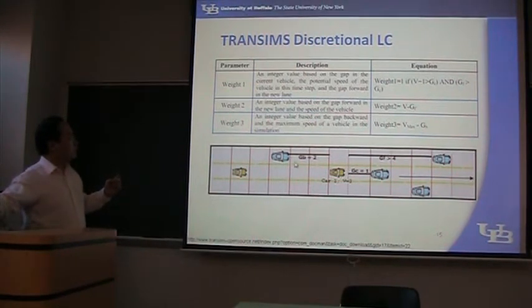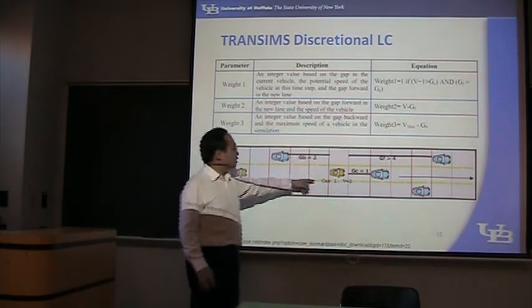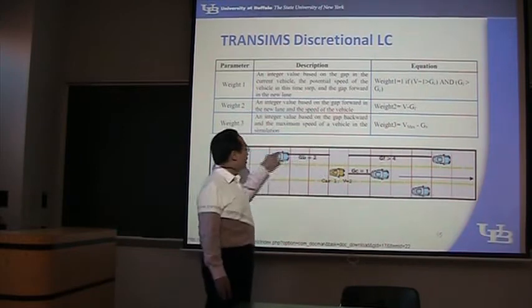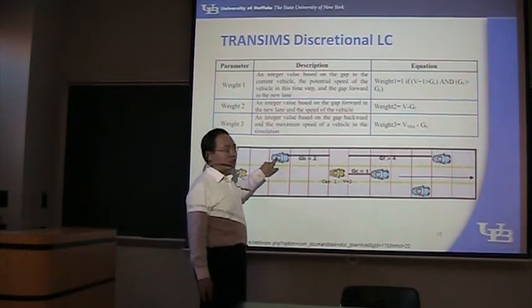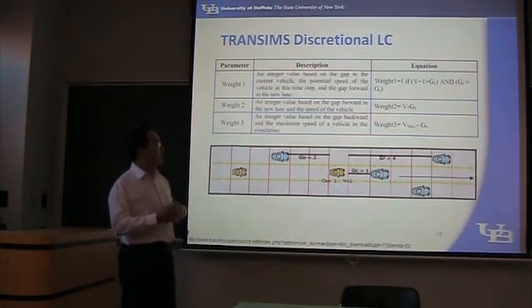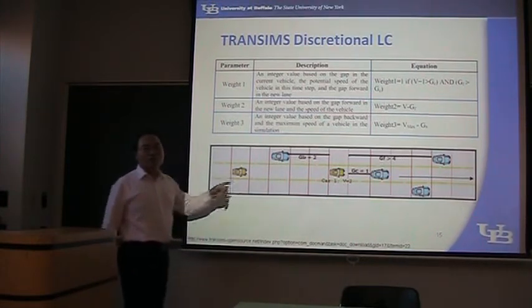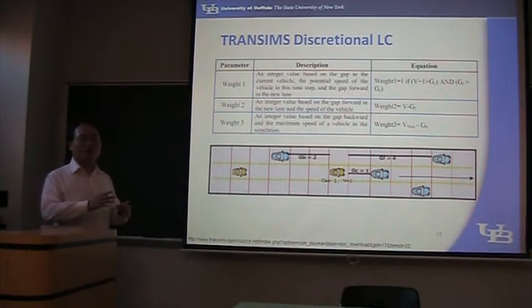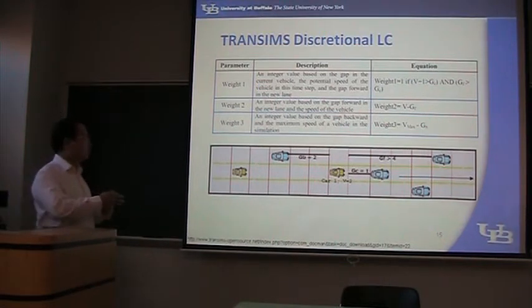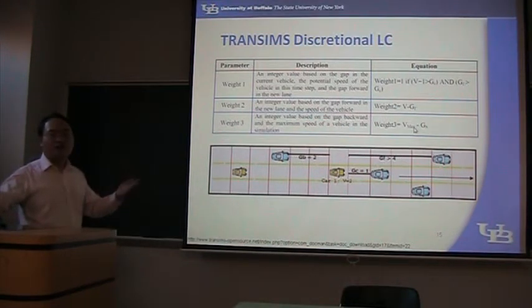Vmax is the maximum speed that this vehicle can travel. So if we move here, this vehicle will be an obstacle to that vehicle. If this vehicle is traveling at a very big speed, Vmax equal to 5, then this gap is too small. Then it becomes a bad reason for not executing lane changes. So Weight 3 equals Vmax minus GB, which is 5 minus 2 equals 3.